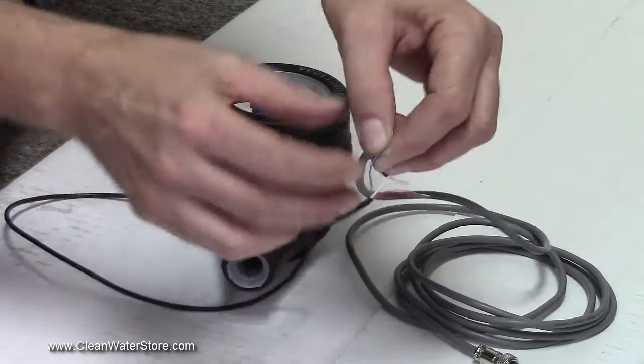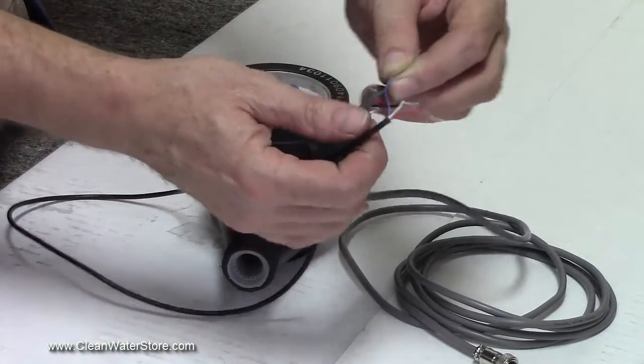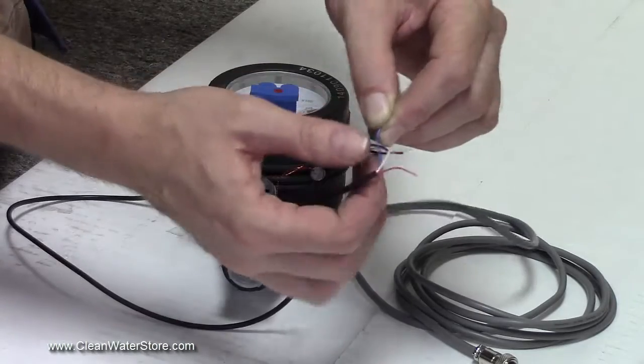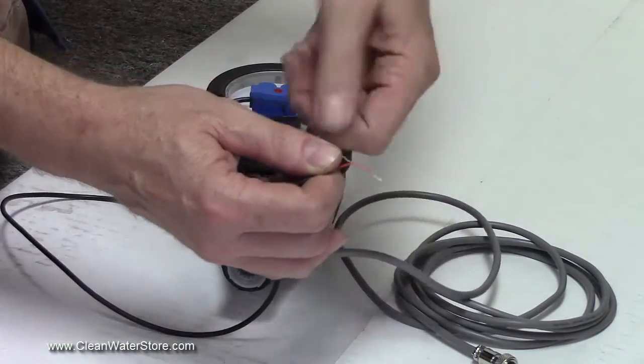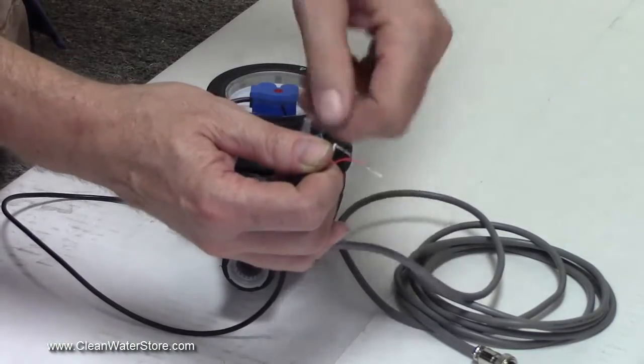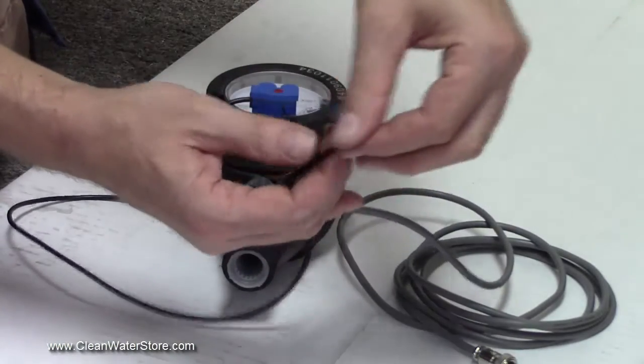Again, I'm not making real connections just for the purposes of showing. And then the red and the red and white - the red for the flow sensor will get kicked back and taped off, it's not used.